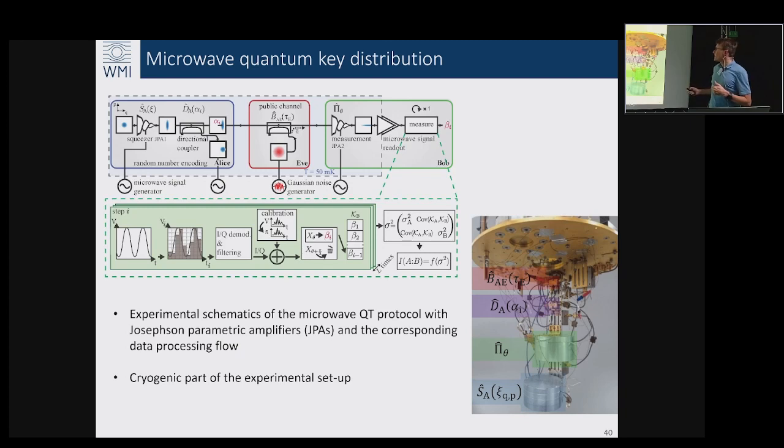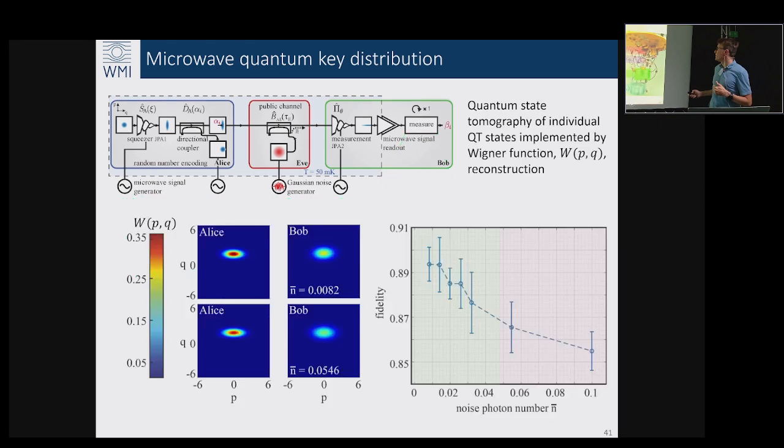But before doing that, what people typically ask to show is the process tomography which can be measured by using fidelity. You can measure the Wigner function at Alice and compare to what Bob has received.